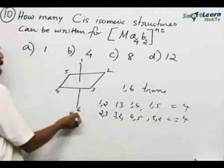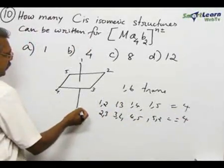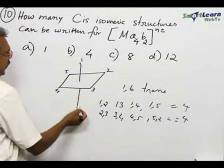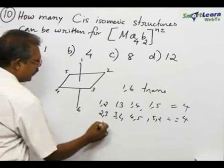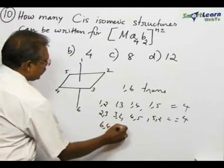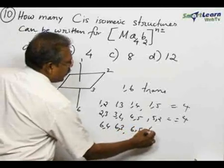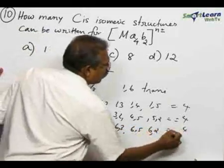The next with respect to six. Now see that 6, 4, 6, 3, 6, 5 and 6, 2. This will also give four.